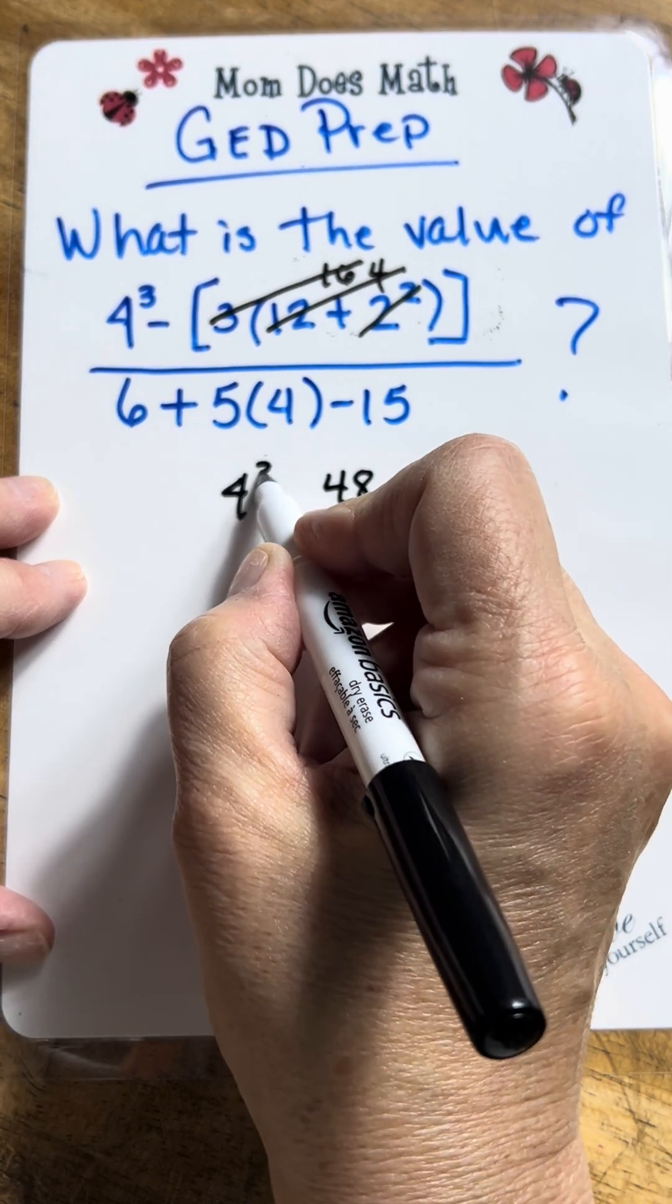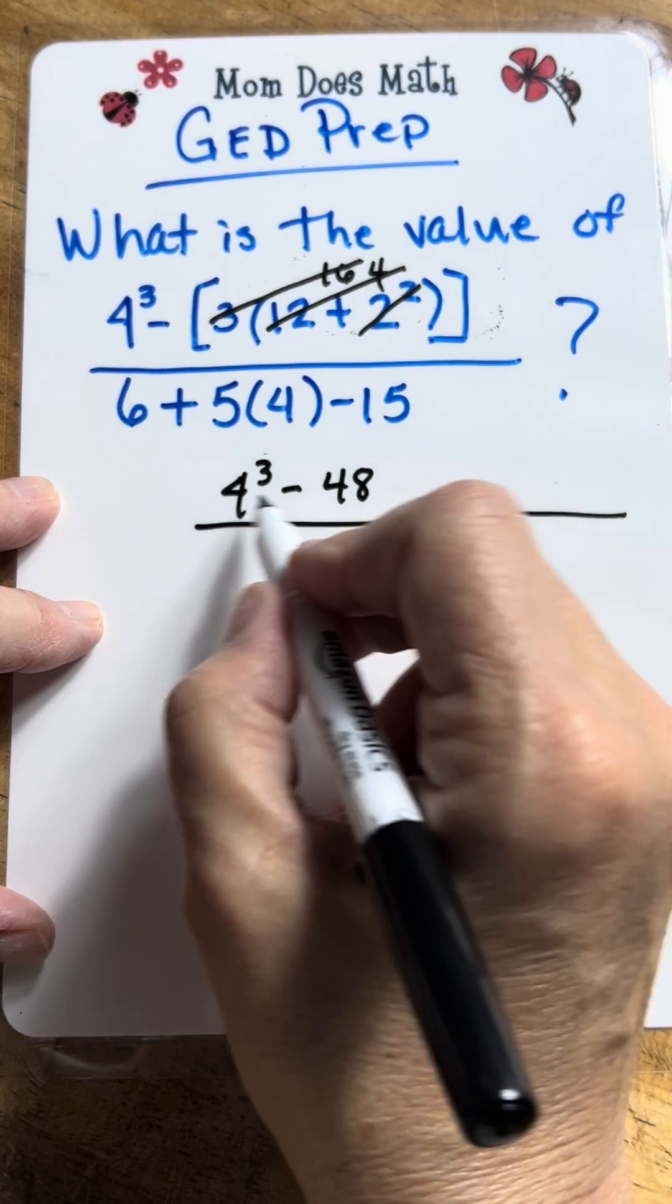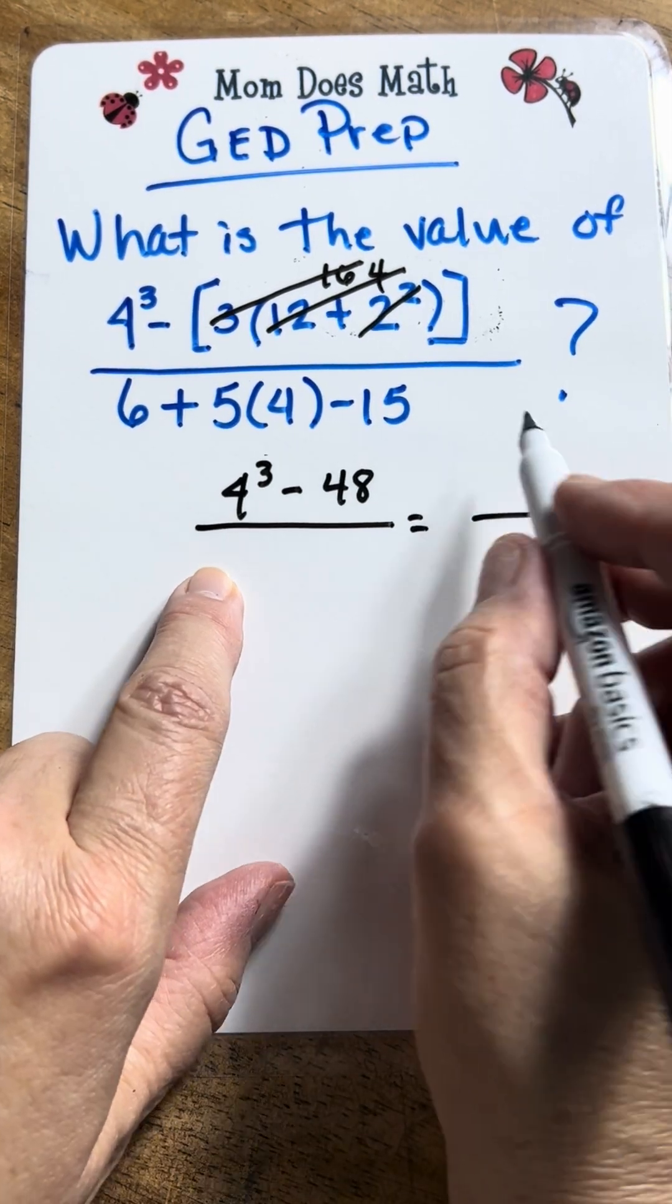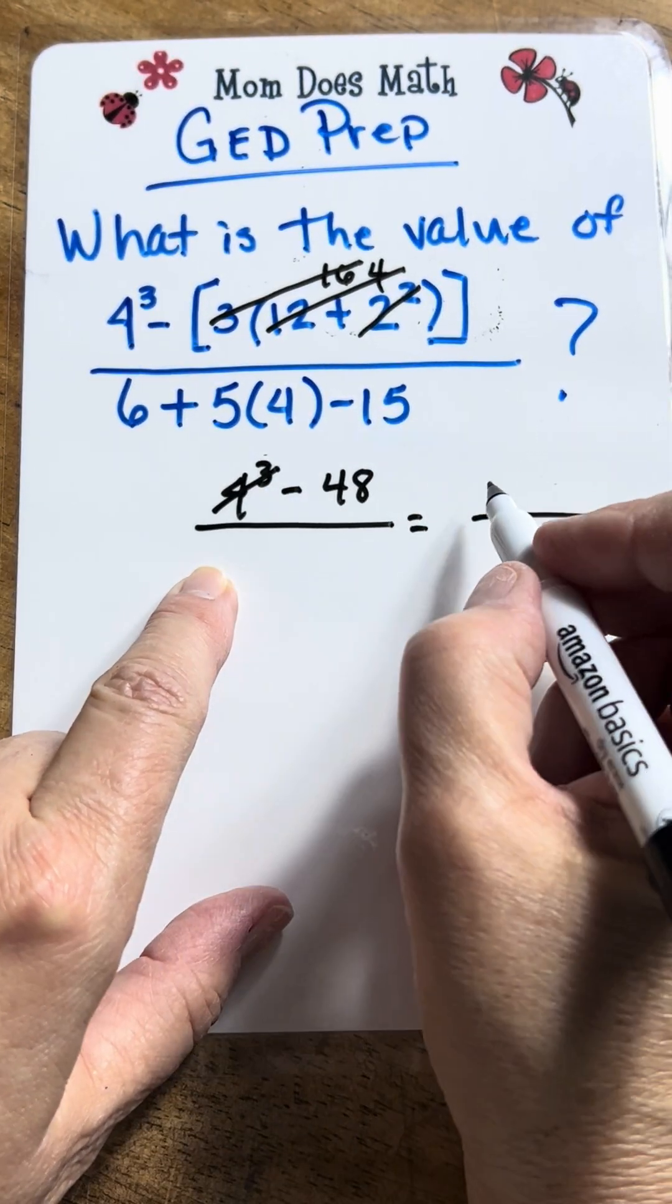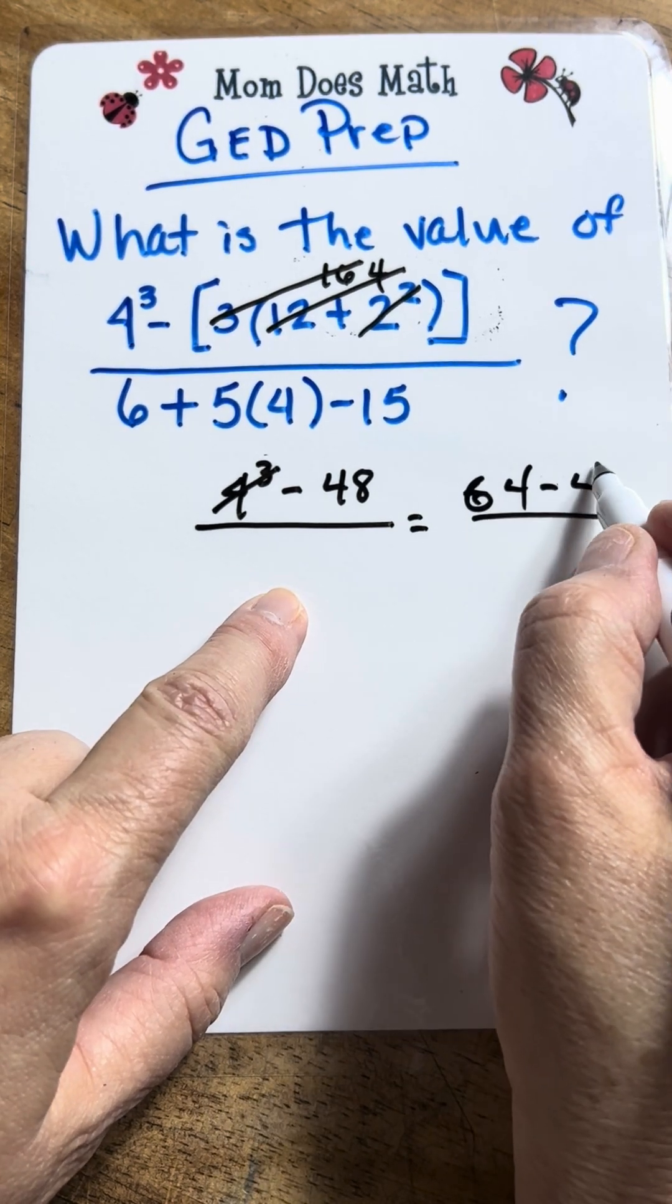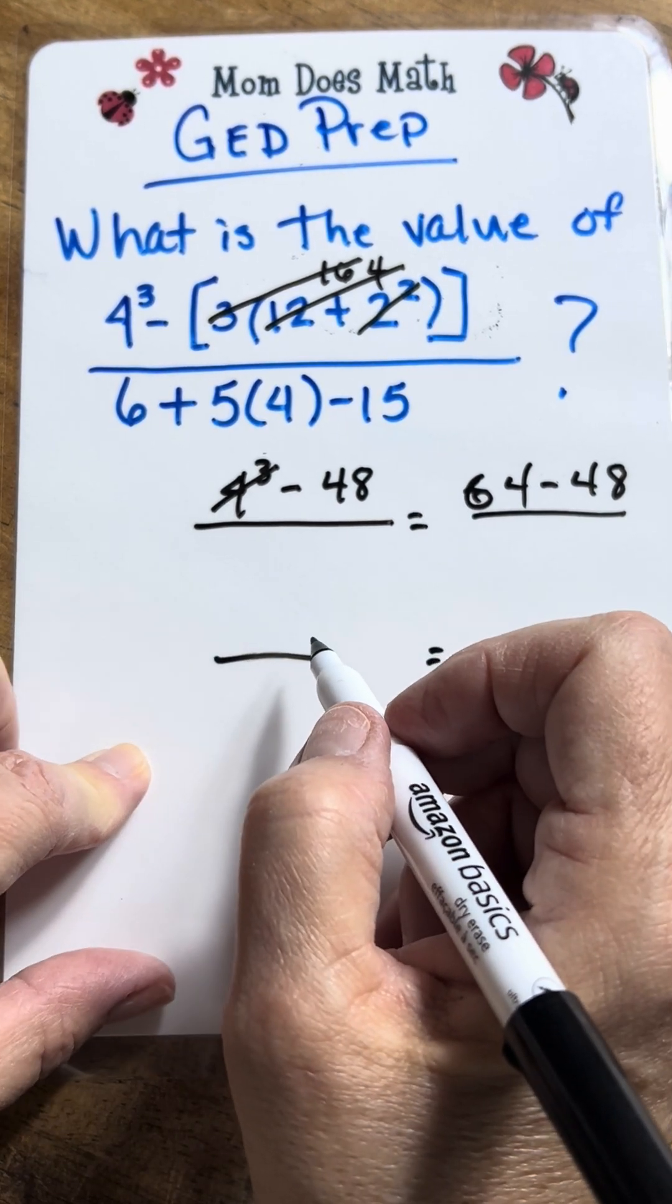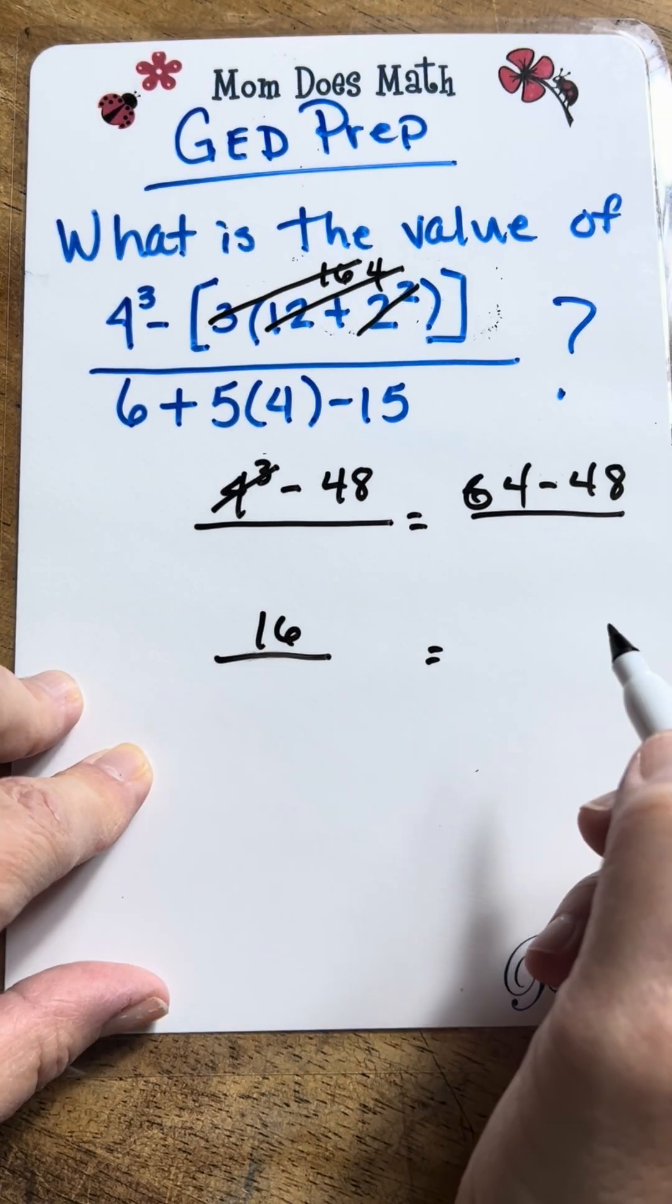So, now I've reduced this to 4 to the third minus 48. And let's go ahead and simplify the rest of the numerator. 4 to the third power is 64 minus 48. And 64 minus 48 is 16.